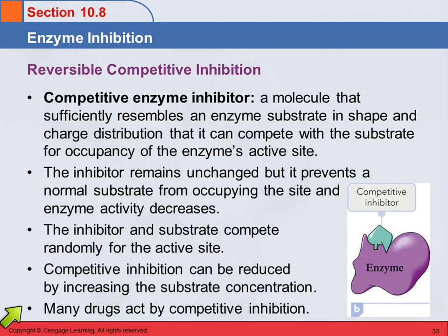There are many drugs that act in this way. Antihistamines are one example — your body makes histamine, which does things you don't like. An antihistamine will come in and block the active site of the appropriate enzymes so that histamine can't be made, or can't be made as quickly. So it inhibits in a competitive way.